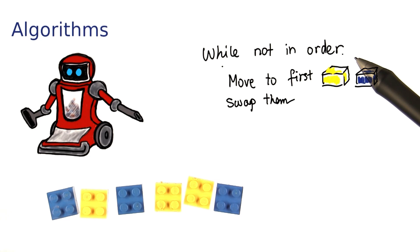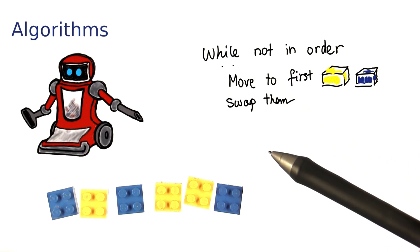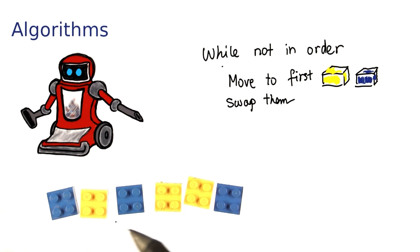Our pseudocode here asks Robbie to repeatedly execute these statements, namely, while the blocks are not yet in order. Each time, Robbie is supposed to scan the sequence of blocks, find the first one that's yellow before a blue one, and swap them.